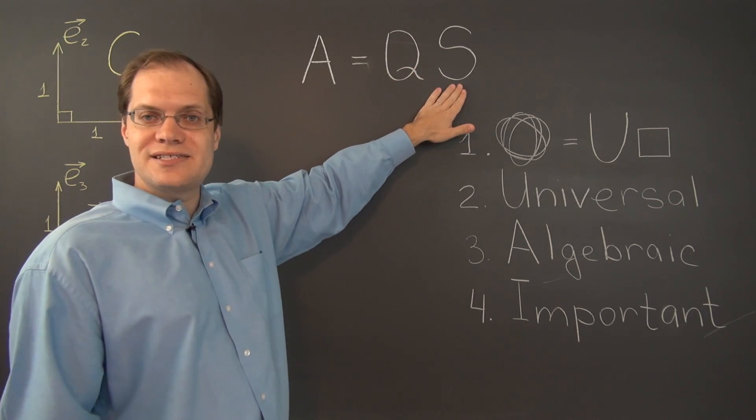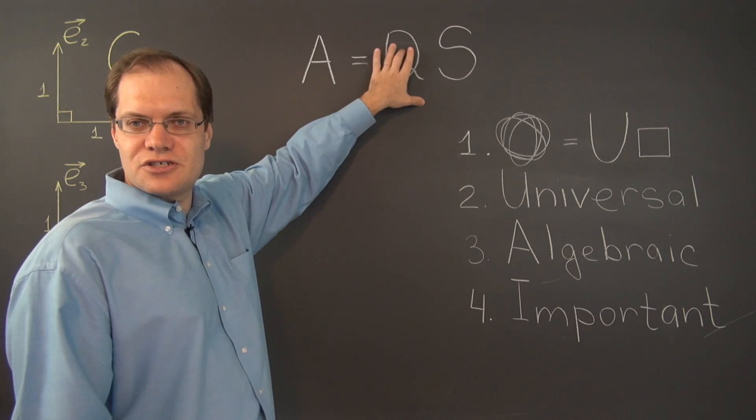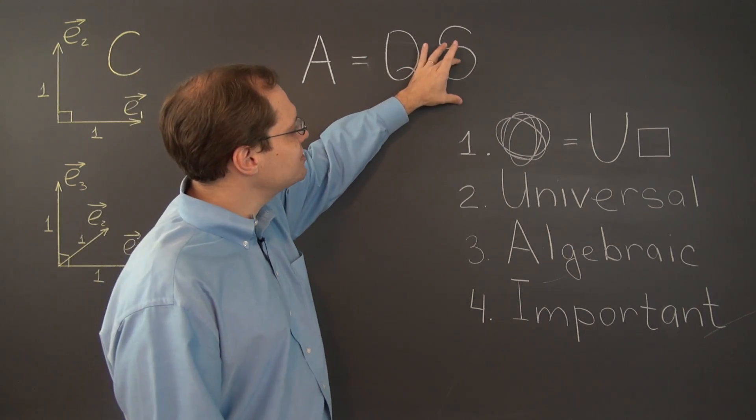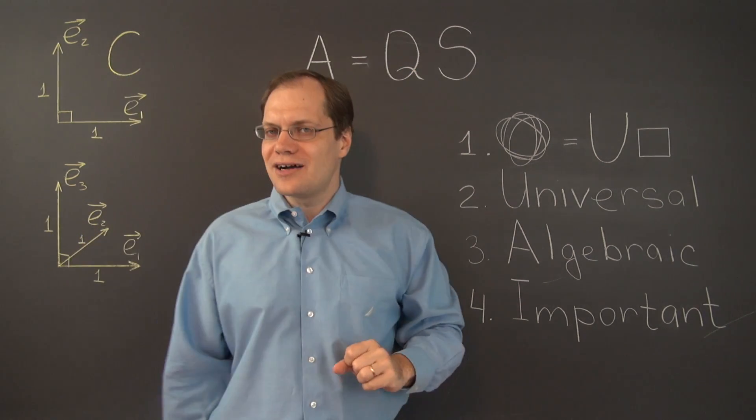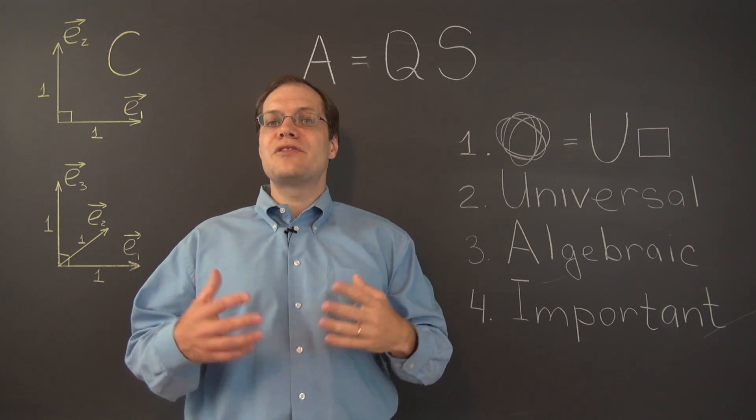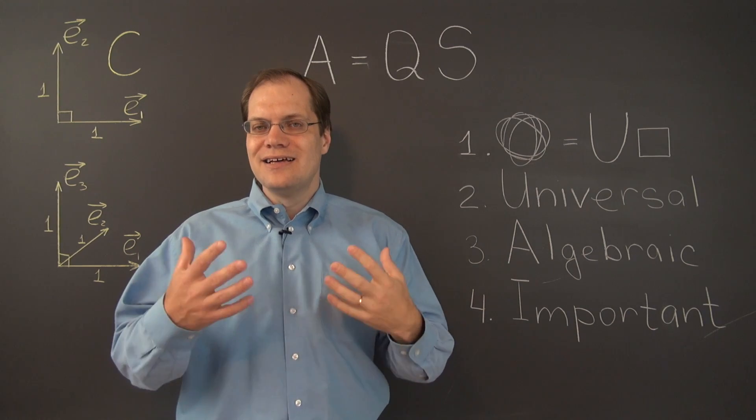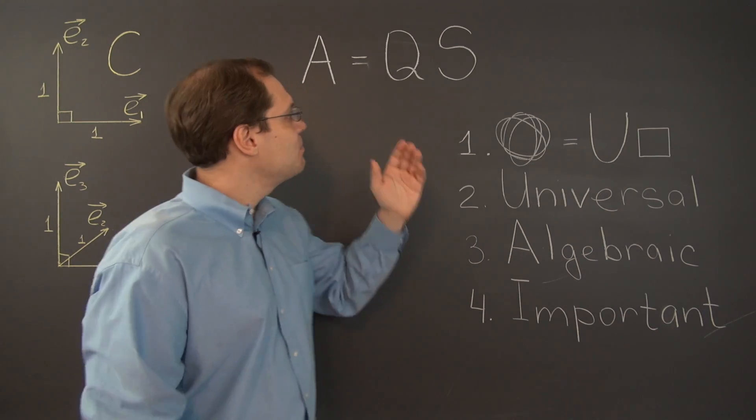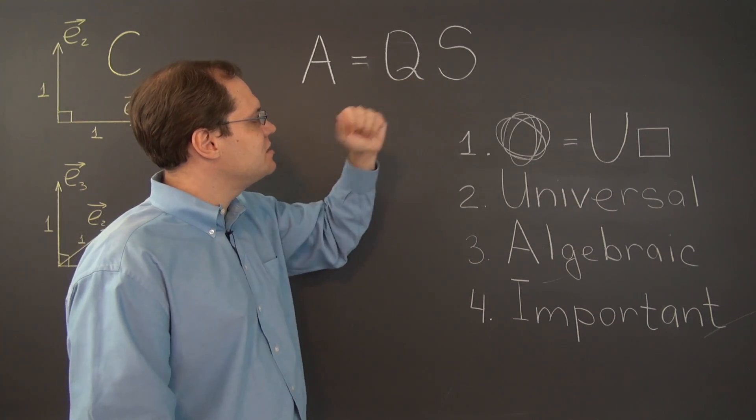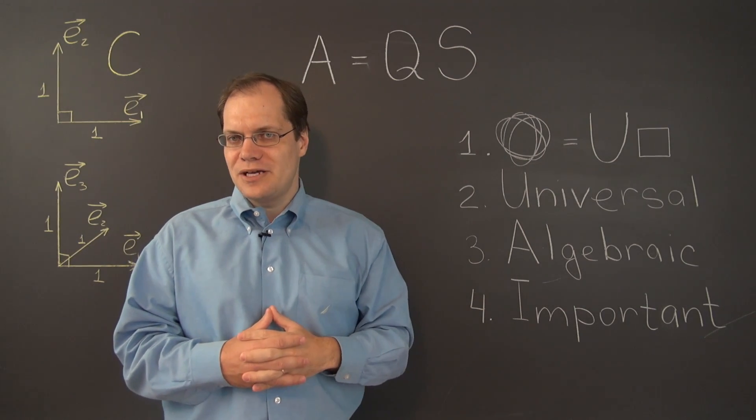Now, both of these are rather simple. These are just rotations and reflections, and these are just scalings along orthogonal directions. So it's rather remarkable that an arbitrarily complicated linear transformation can be represented as a combination of these two rather simple linear transformations.